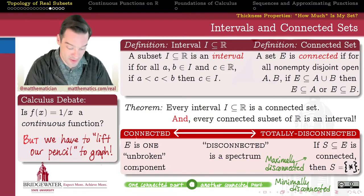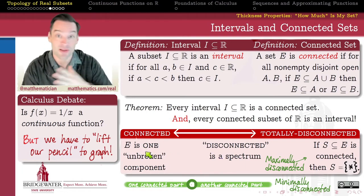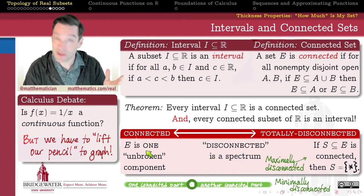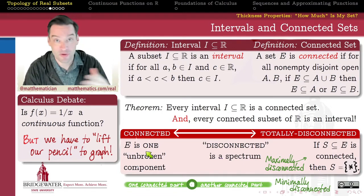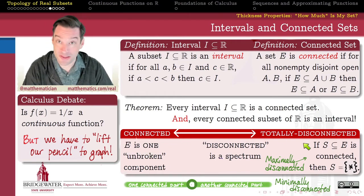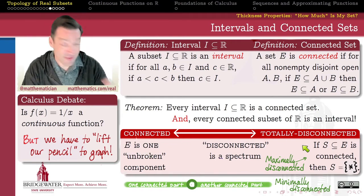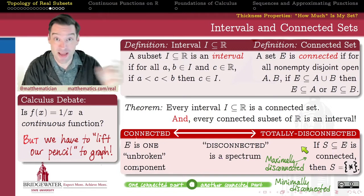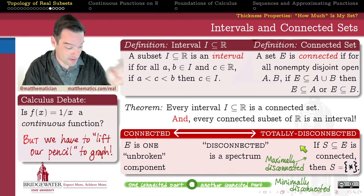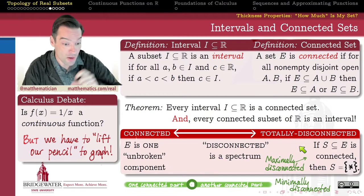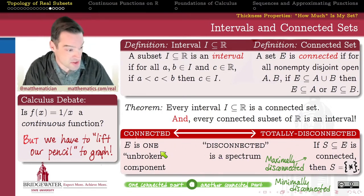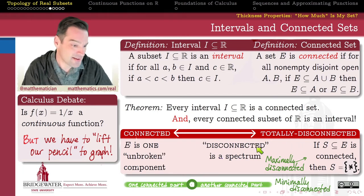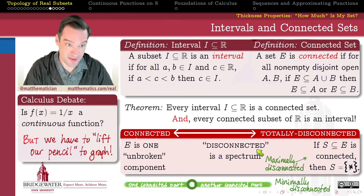On one end of the spectrum, we have connected sets with a single unbroken connected component — in the real line, just a single interval, whether open, half-open, or closed. On the other end, we have the totally disconnected sets, where we can't find even a single connected subset that consists of more than a single point. Everything in between — which is not connected but might not be totally disconnected — we generically call the disconnected sets. So connectedness exists on this spectrum.